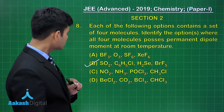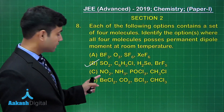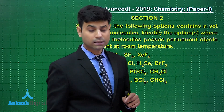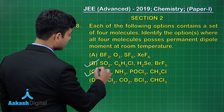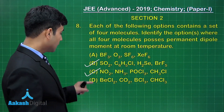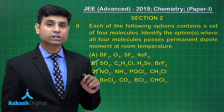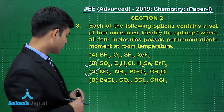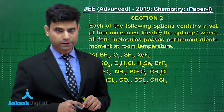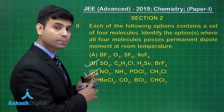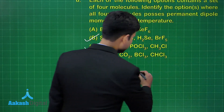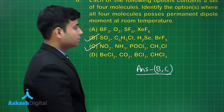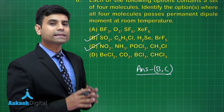Option C: NO2 has a dipole moment, ammonia has a dipole moment, POCl3 has a dipole moment, and CH3Cl also has a dipole moment as they are all unsymmetrical — so option C is also correct. Option D: BCl2 is symmetrical with linear shape and both B-Cl bonds at 180°, and CO2 also has zero dipole moment — so D is not correct. The correct answers are option B and option C. This concludes section 2.